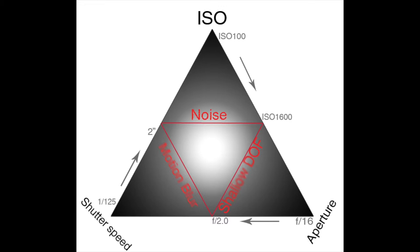Larger apertures let in more light, so faster shutter speeds can be used to freeze movement. Switch to a smaller aperture and the amount of light passing through the lens is reduced; consequently the shutter speed must become slower, increasing the risk of camera shake and subject movement. To get around this, you should increase the ISO or use a camera stand. This allows you to use smaller apertures to increase the depth of field while using slower shutter speeds.